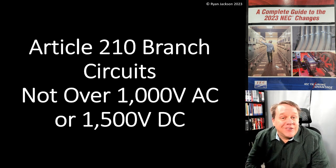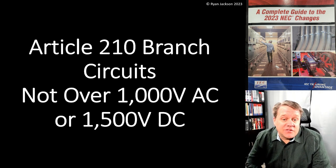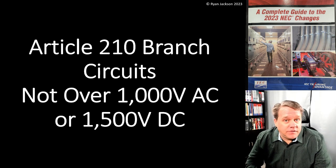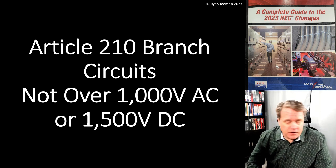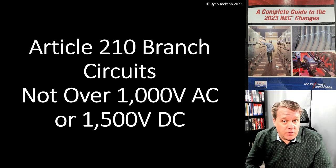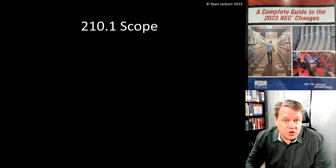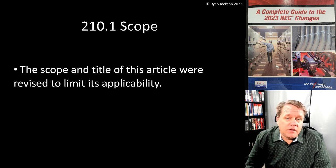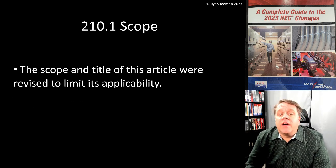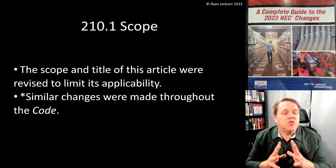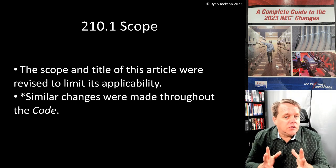Let's get into Article 210, which covers branch circuits up to a thousand volts AC or 1500 volts DC. You might already know the changes from the title of the article, because that's what changed — 210.1, the scope. The scope and title of the article were revised to limit its applicability, and similar changes were made throughout the NEC.